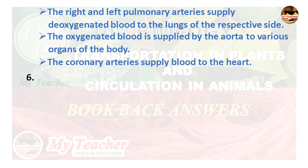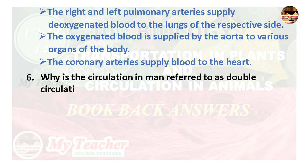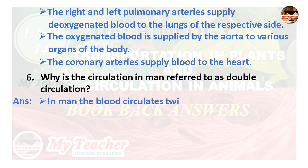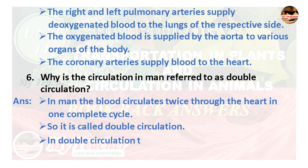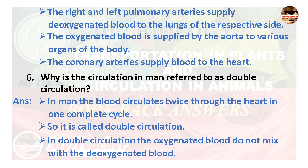Sixth question: Why is the circulation in humans referred to as double circulation? Answer: In humans, blood circulates twice through the heart in one complete cycle, so it is called double circulation. In double circulation, oxygenated blood does not mix with deoxygenated blood.